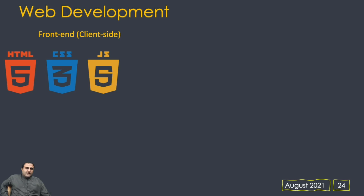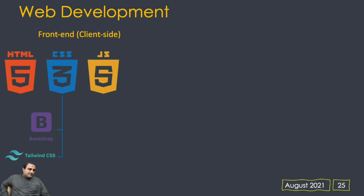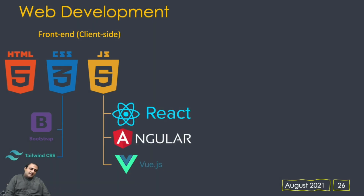We also have CSS frameworks such as Bootstrap or Tailwind, which enable quick formatting of web pages by providing more abstraction to the programmer so they can quickly handle the presentation of documents. On the JavaScript side, we have frameworks like React, Angular, and Vue, which build on JavaScript and provide runtime behavior and web components on the client side.